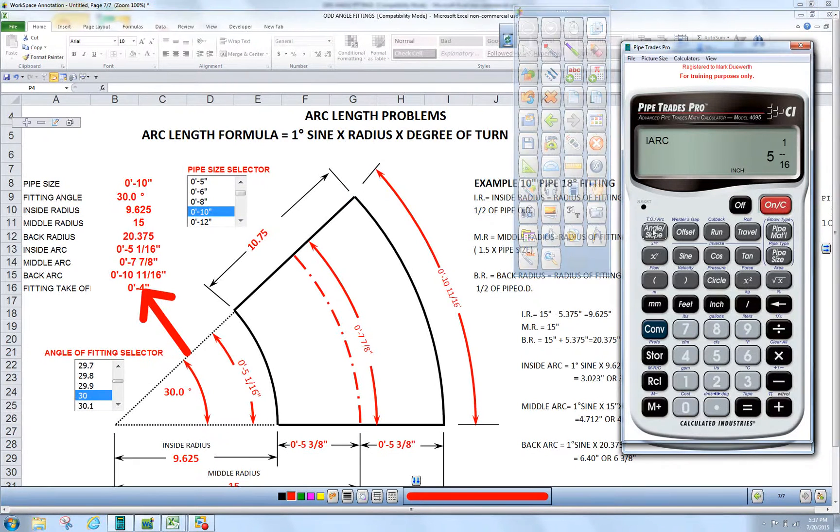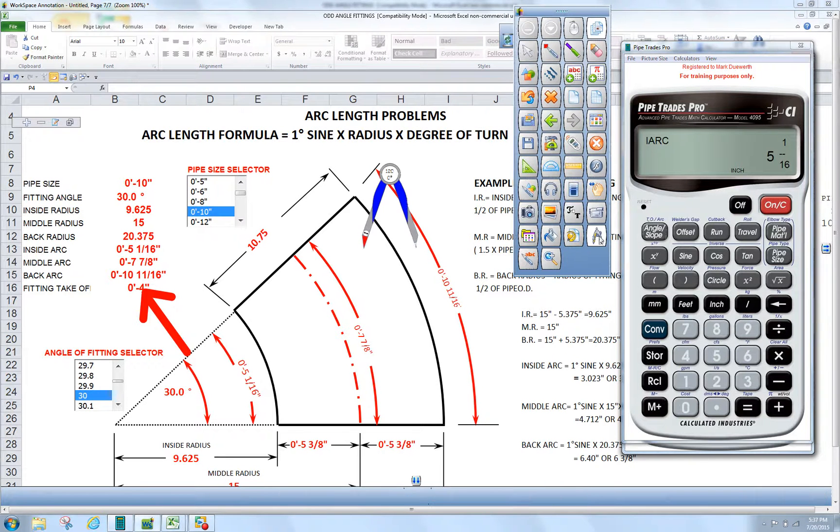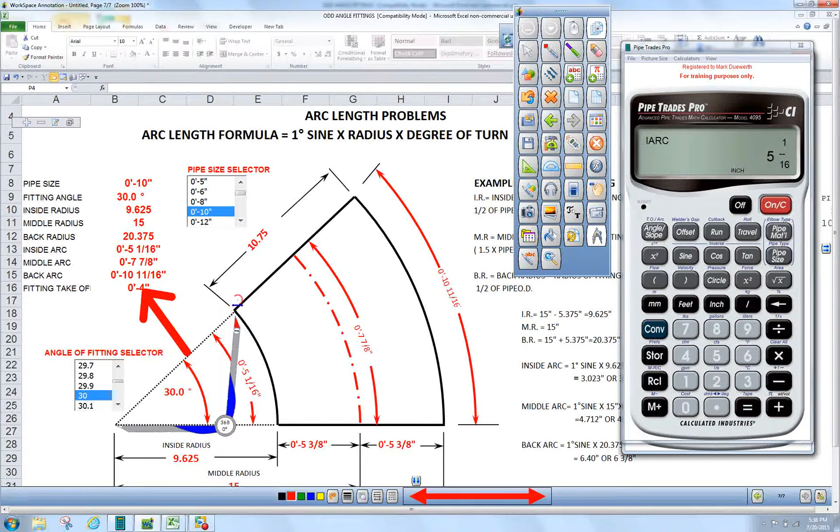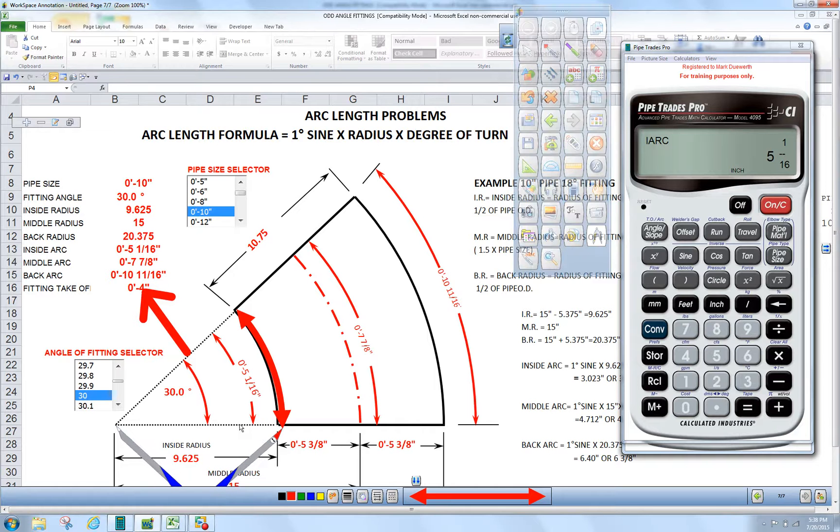We press angle slope again. That confirms our inside arc. If we were to lay that out of a long radius 90, our inside arc would be 5 and 1/16.